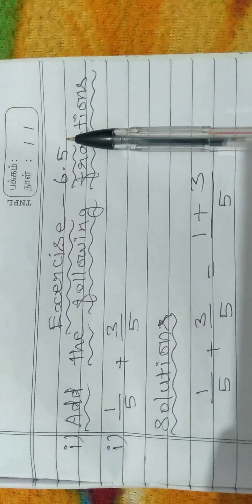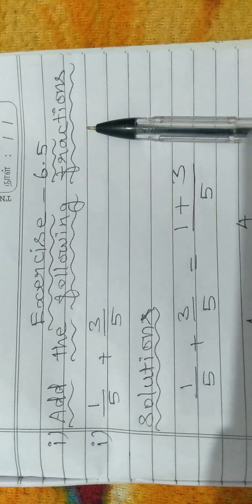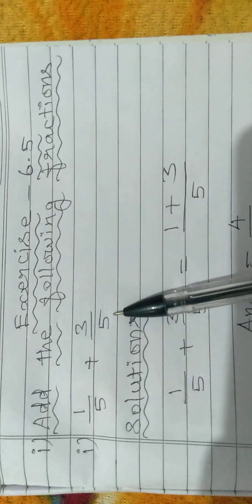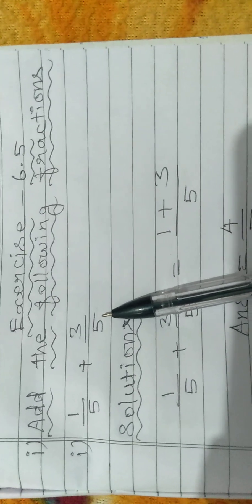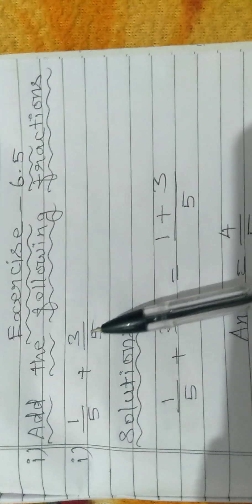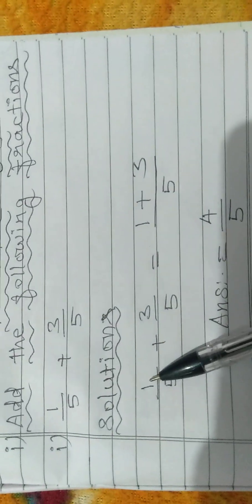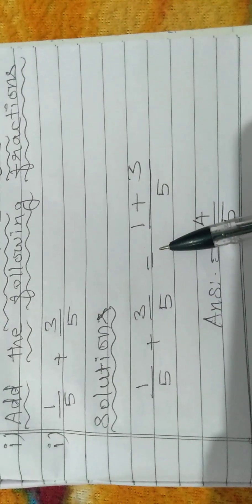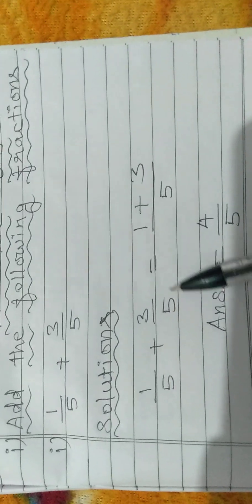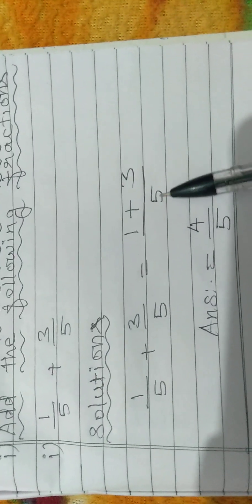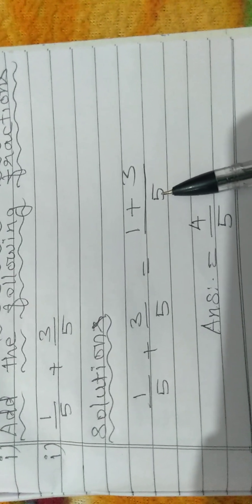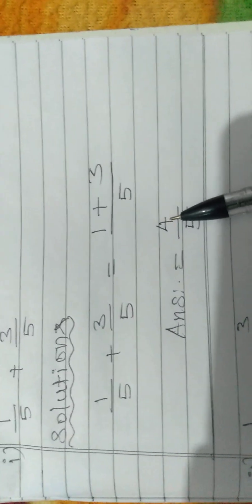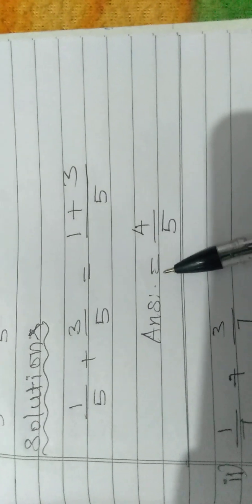Exercise 6.5: Add the following fractions. Fraction 1 by 5 plus fraction 3 by 5. The denominators are the same, that is 5, so we can add the numerators. 1 by 5 plus 3 by 5 is equal to — the denominator is 5, and we add the numerators: 1 plus 3 is equal to 4. The answer is fraction 4 by 5.